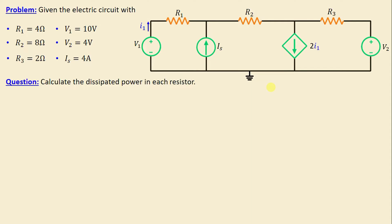Let's consider this network, which consists of three resistors labeled R1 through R3, along with two independent voltage sources and one current source. Additionally, we can observe the presence of a dependent source — specifically a current controlled current source. The question is to calculate the dissipated power in each resistor.